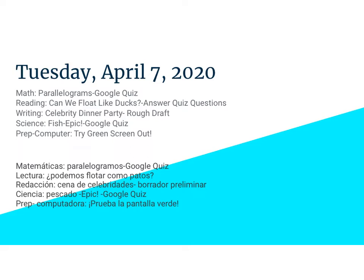In reading, we're going to be reading that same article called Can We Float Like Ducks? You'll also have a question about that on your Google quiz, which is on your Google Classroom. In science, we're going to be reading about the animal group called Fish. You're going to be reading a book about that on Epic and then you'll have a question about it on your Google quiz.